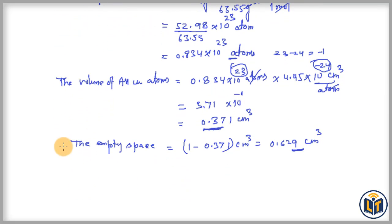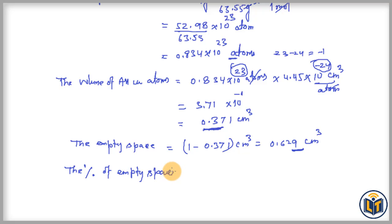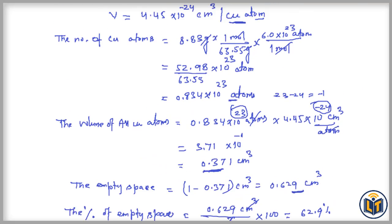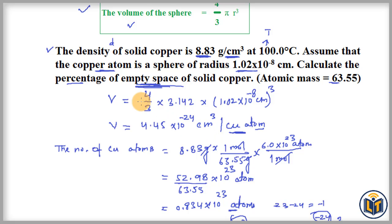We apply the formula: percentage of empty space = (empty space / total volume) × 100. Substituting the values: (0.629 cm³ / 1 cm³) × 100. The centimeter cube units cancel, and we get 62.9%. This is the percentage of empty space in solid copper.